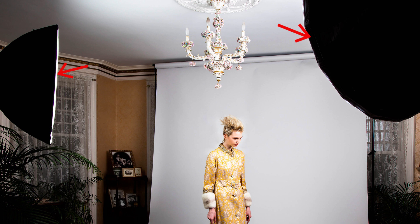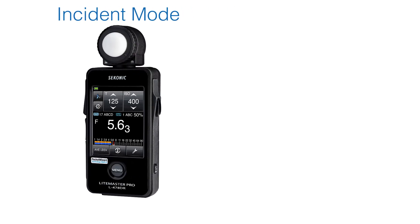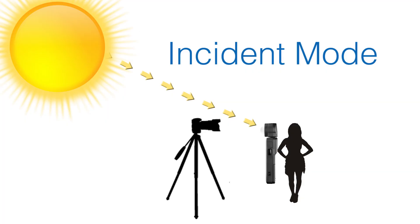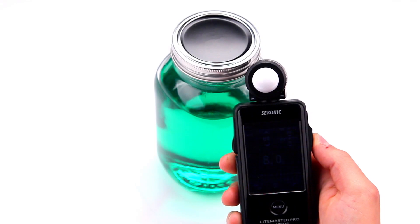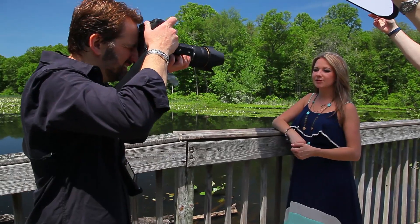You can measure ambient or flash using one of two measuring methods with the L478: incident mode or reflected mode. Incident mode measures the light falling on the subject and uses the lumisphere — the white dome — to measure the light volume. Incident mode is the most reliable method for measuring scenes because it reads only the volume of light and not the characteristics of the light, such as texture, color, reflectivity, or translucent qualities. Reflective mode measures the light reflecting off the subject and uses the optical spot attachment to measure the light reflecting back to the camera.